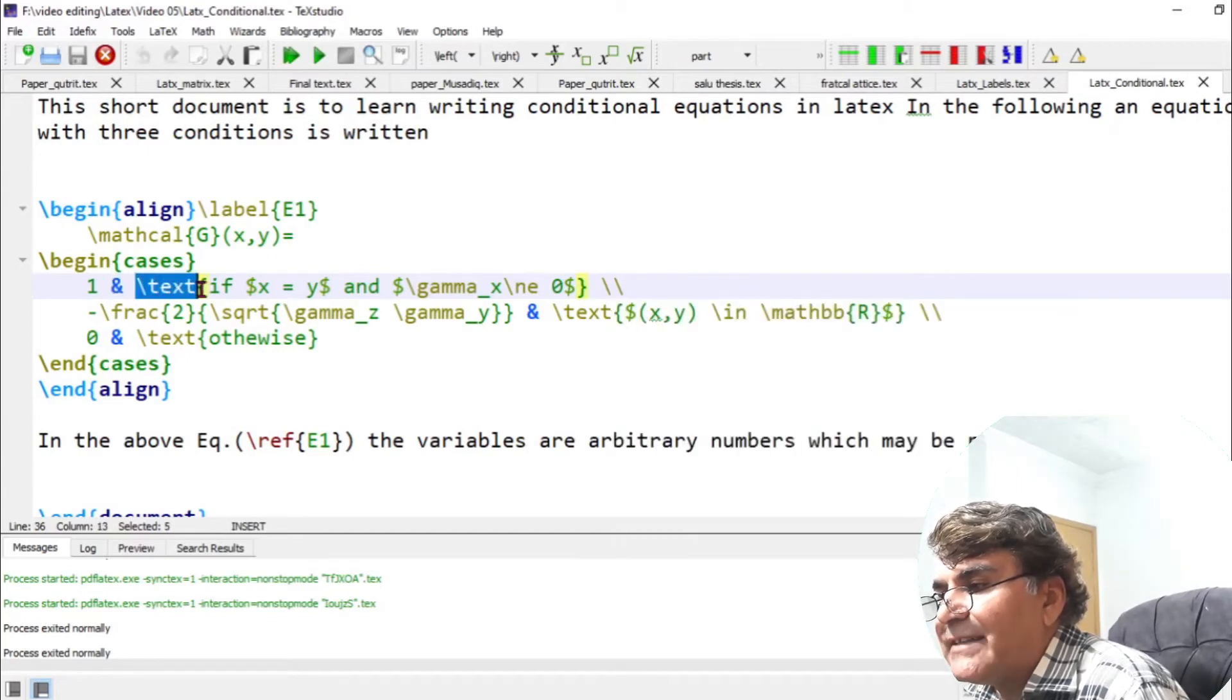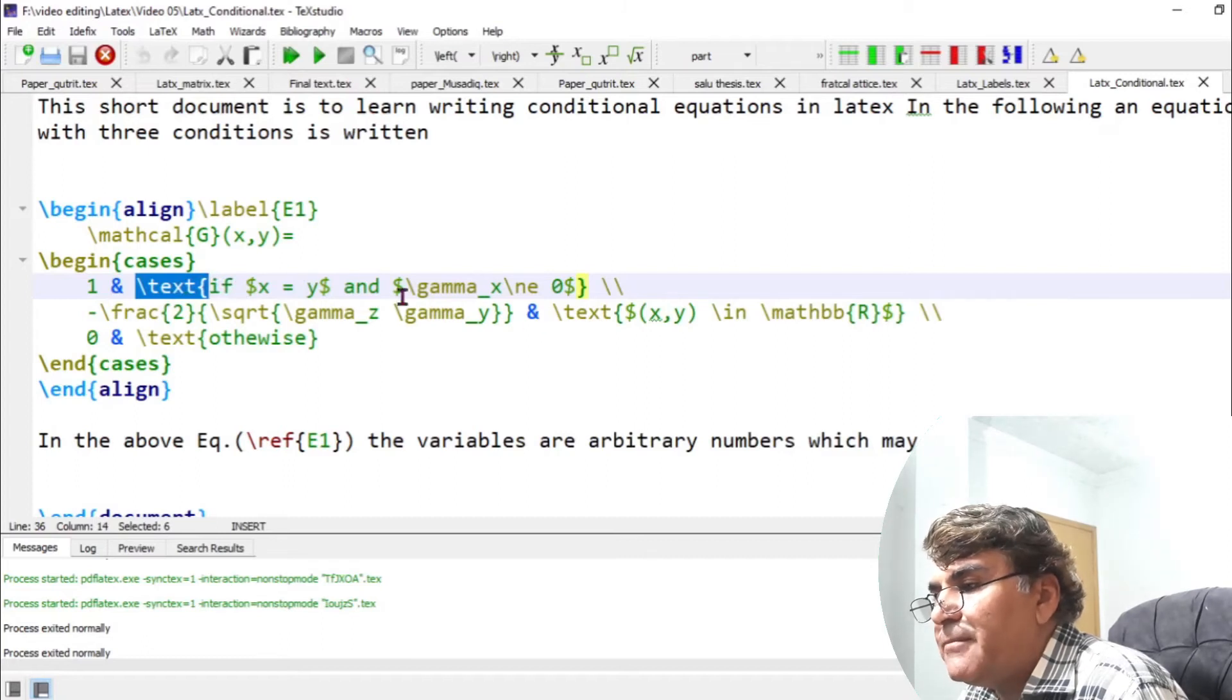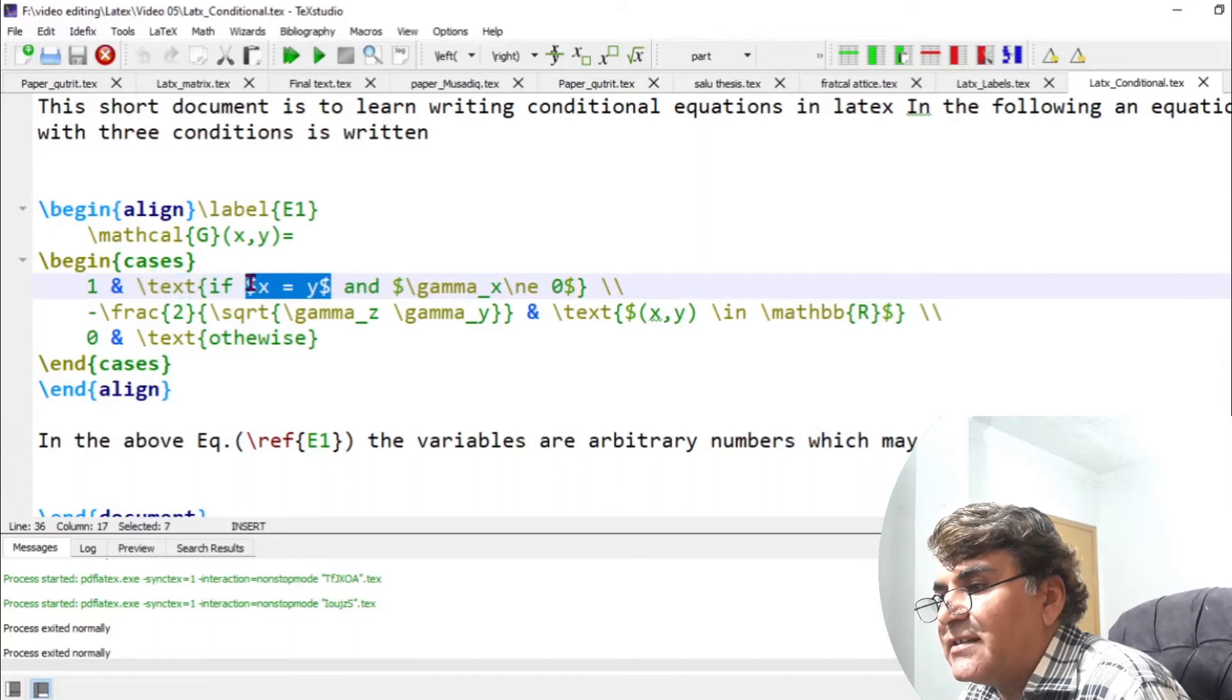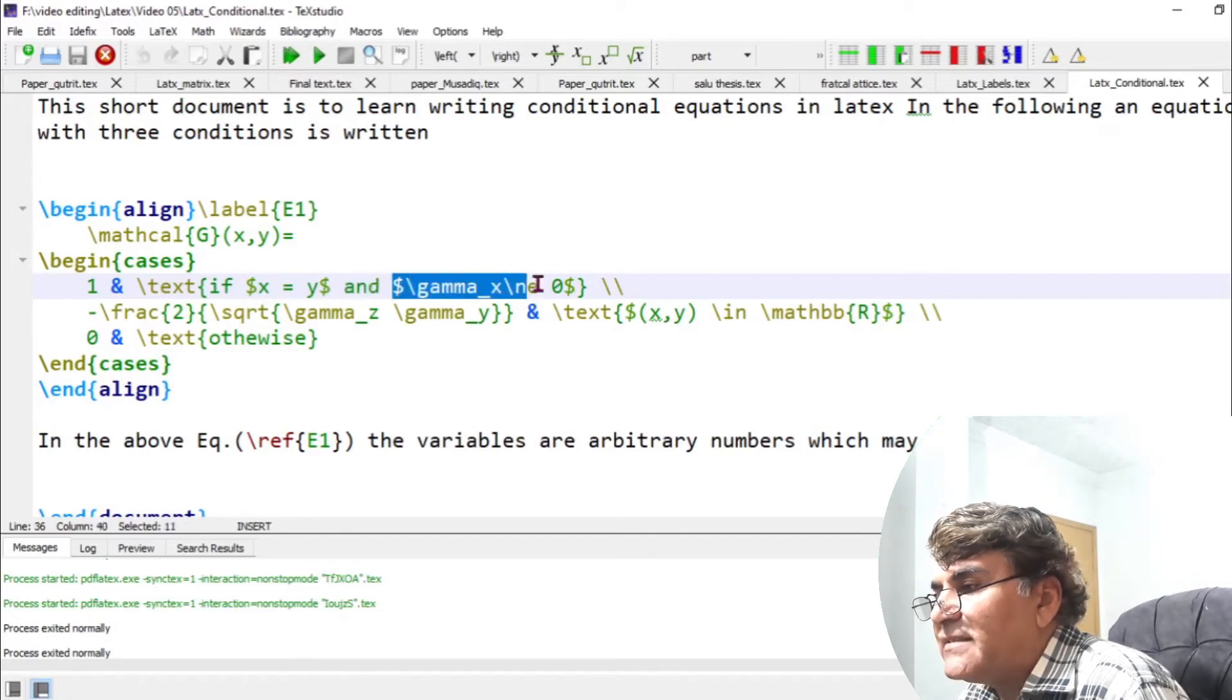Inside the condition region, I have put a text command and then followed by the condition. So the condition x is equal to y is written inside the math symbol by adding dollar signs then text and then again the math symbol.